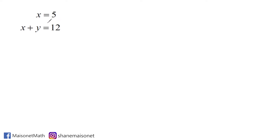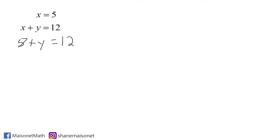Now what we're going to do, because it says that x is equal to 5, is we are going to substitute x in the other equation with 5. So we take this second equation and substitute the x with 5, then write the remainder of our equation and solve for y. To isolate y, we take everything else on that same side of the equal sign and move it to the other side by performing inverse operations. So we take this positive 5 and move it to the other side by writing minus 5, and 12 minus 5 is 7, leaving us with positive 1y, or just y.